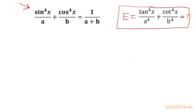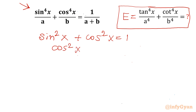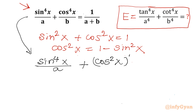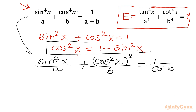I will begin by writing the most important and useful trigonometric identity: sin²x + cos²x = 1. From here I can write cos²x = 1 − sin²x, which I will apply to our equation. Let us write our equation first: sin⁴x / a + cos⁴x (written as cos²x whole square) / b = 1/(a+b). Now we will use cos²x = 1 − sin²x.